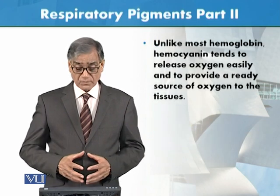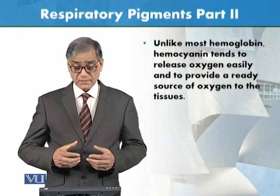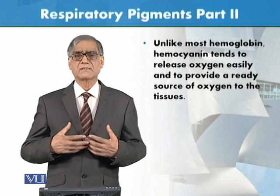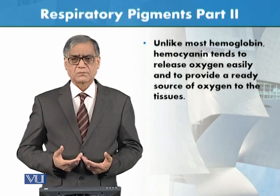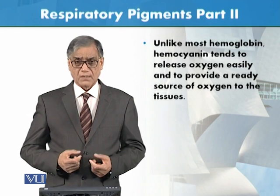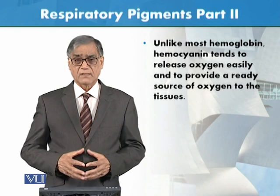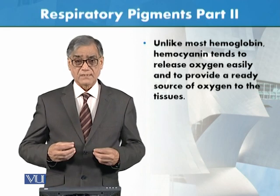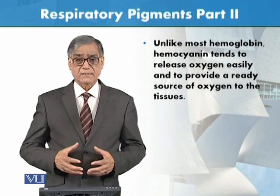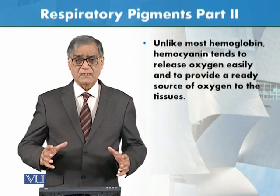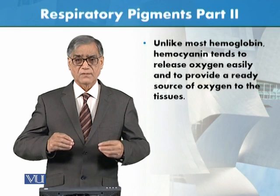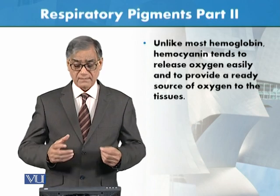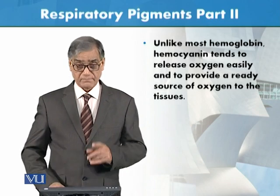Unlike most hemoglobin, hemocyanin tends to release oxygen easily and provides a very ready source of oxygen to the tissues which are richly supplied with oxygen. This quick supply of oxygen to tissues is all due to hemocyanin — this is its key property.